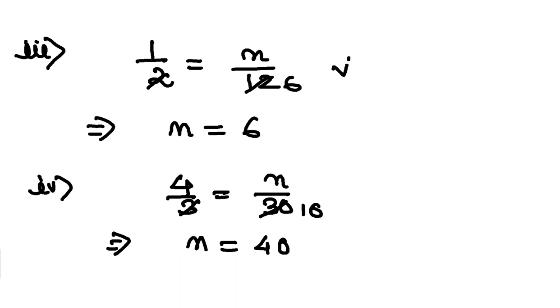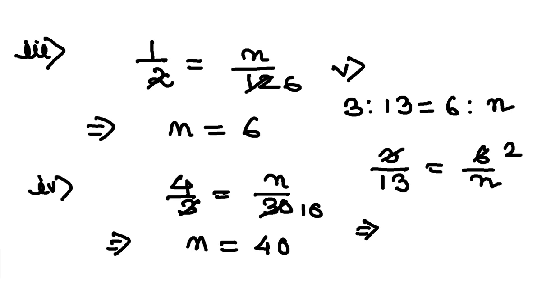Now the last one, the fifth one: 3 is to 13 is equal to 6 is to n, rather. You have 3 by 13 is equal to 6 by n. If I cross multiply, before that I can make it easier, 3, 2 is 6. So n is equal to 13 into 2, that is 26, isn't it.